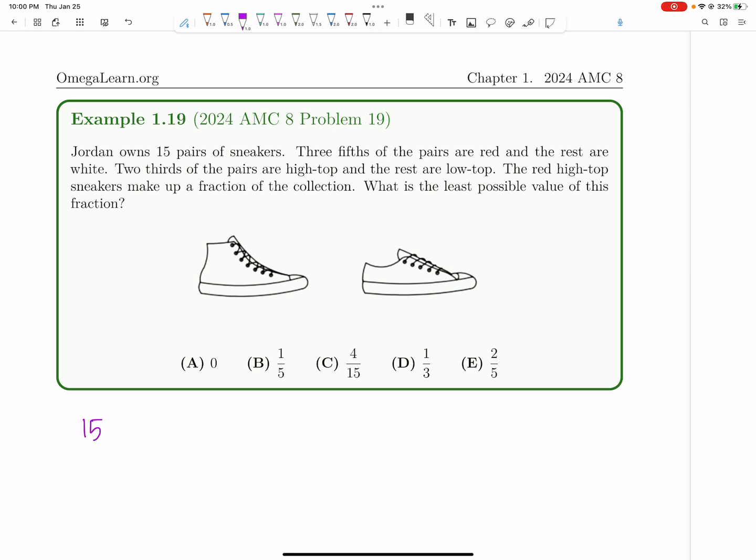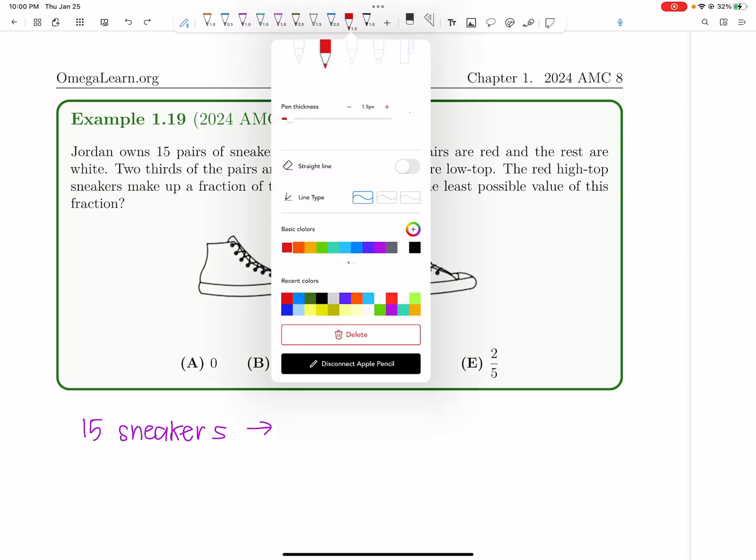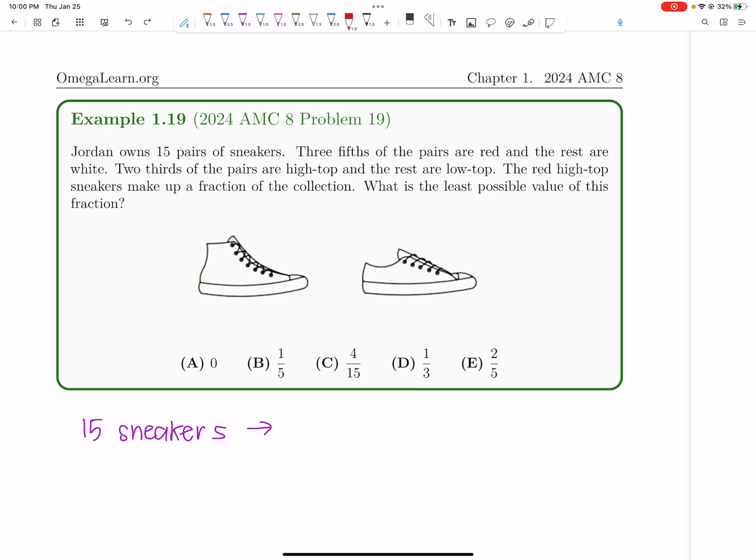So first of all, 15 total sneakers. Nine of them are red. And therefore, as a result, we know that six of them are white. But we really only care about the nine red ones.